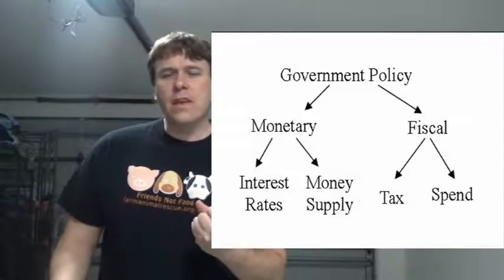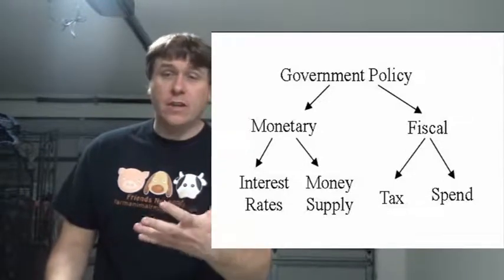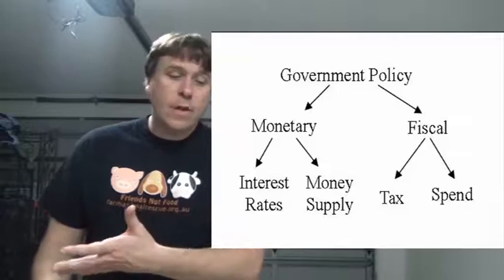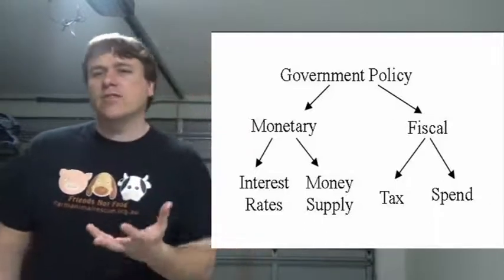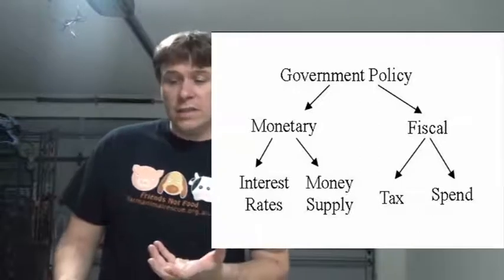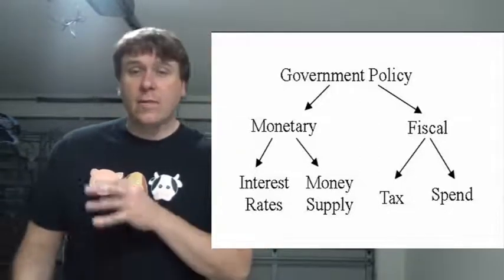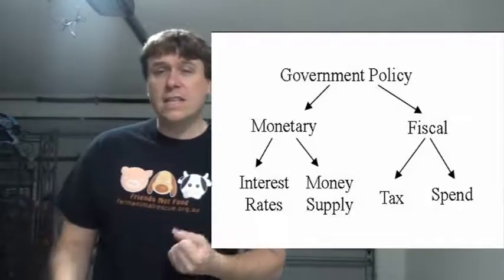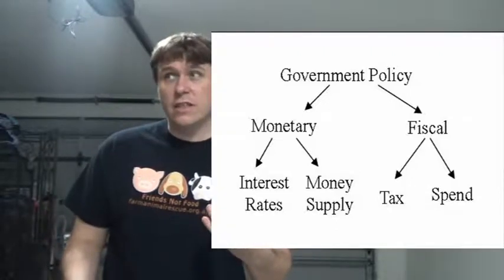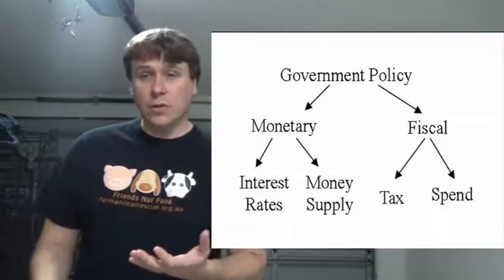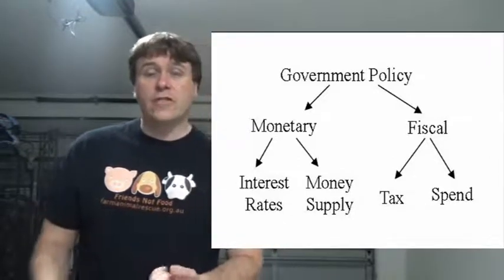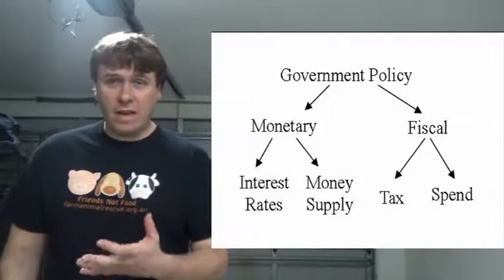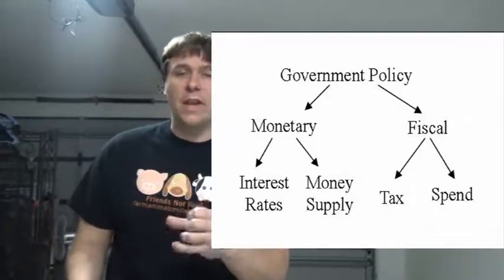Fiscal policy is when the government intervenes by increasing government expenditure — for example, building more roads, more hospitals, or various policy campaigns. It's basically government spending of money being put into the economy. Another way of looking at fiscal policy is taxation — you can increase taxation, reducing people's disposable income, making it contractionary, or you can reduce tax or introduce subsidies.